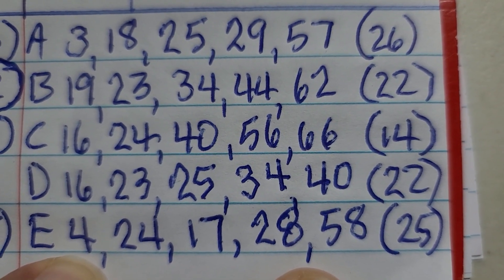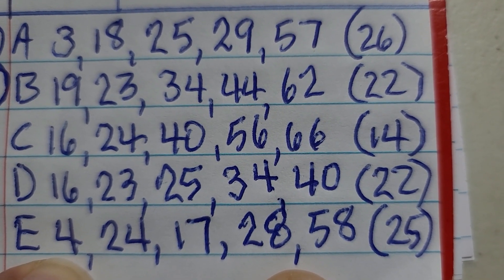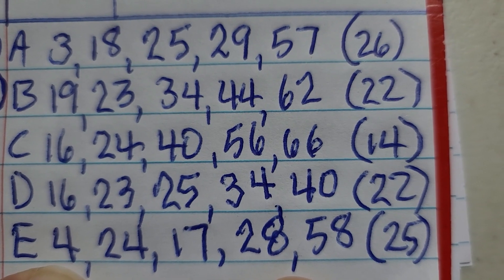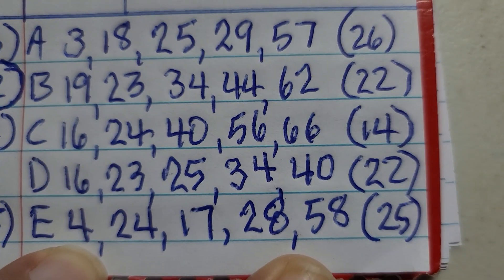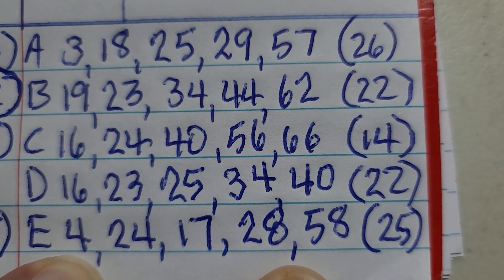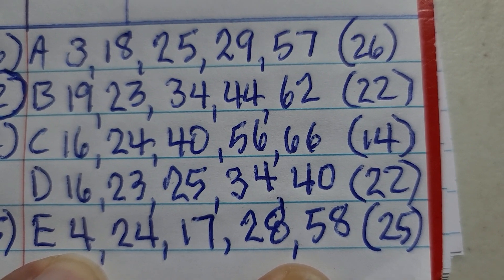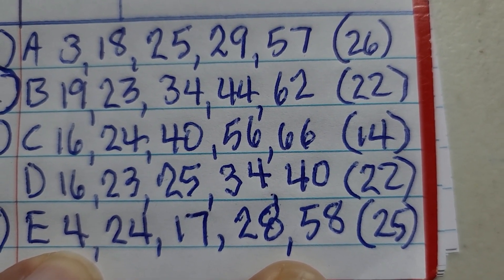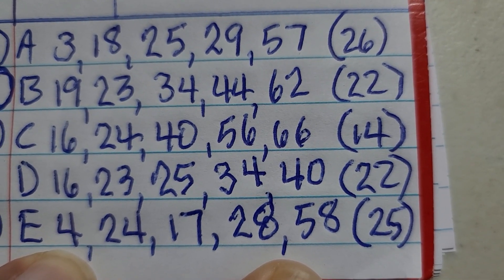Line E I am working slightly different. What I have done is take a look at my primary reads and decided to add one or subtract one from my primary reads. The resulting number set E is 4, 24, 17, 28, 58, and the Powerball is 25. So here are the five number sets that you can use.